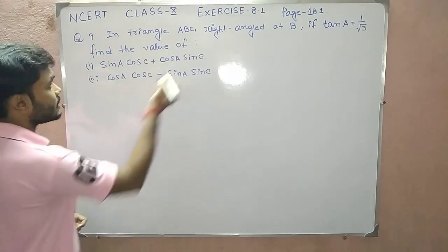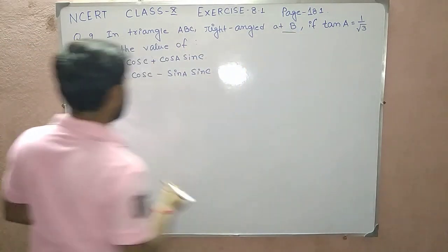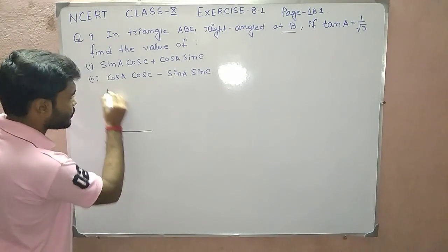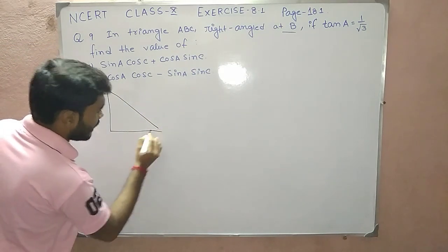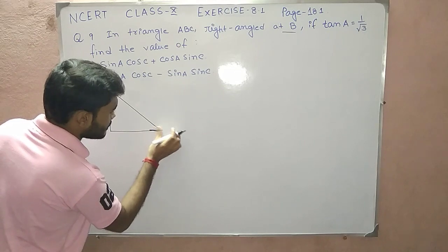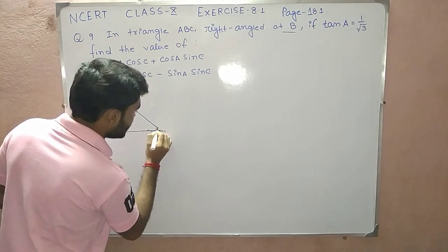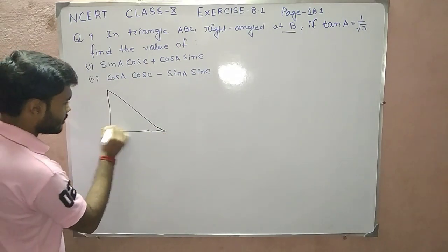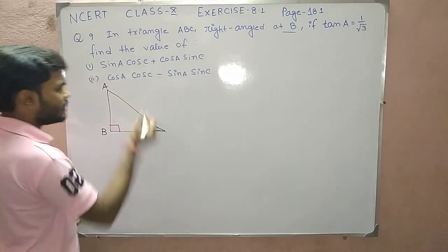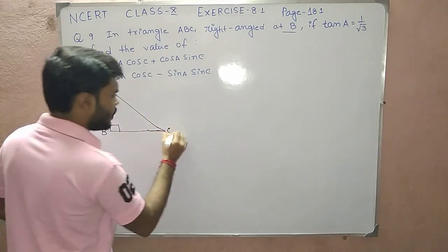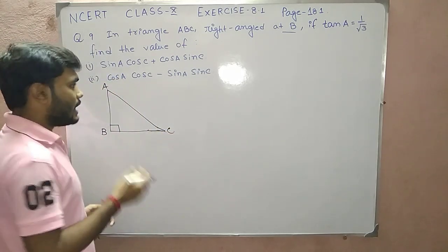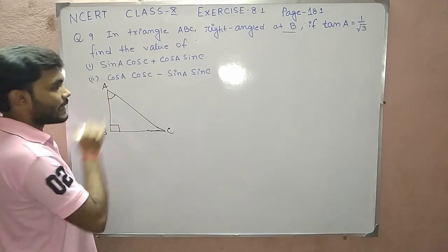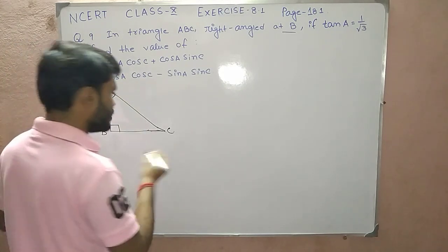So, what is the question? It is given that the right angle is at B. I am drawing a right angle triangle here. According to the question, the right angle is at B, so I am naming this vertex B. This angle is 90 degrees, and the other two vertices are A and C.